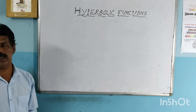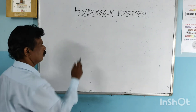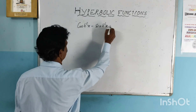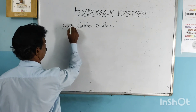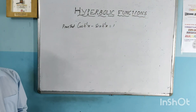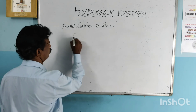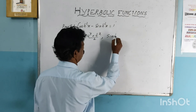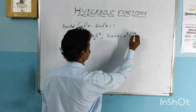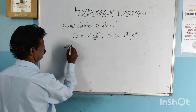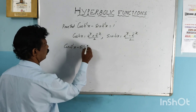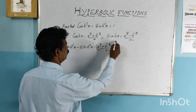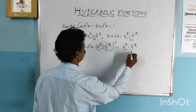Now we can prove some problems based on hyperbolic functions. First, prove that cosh squared x minus sinh squared x is equal to 1. We write cosh(x) equals e raised to x plus e raised to minus x all over 2, and sinh(x) equals e raised to x minus e raised to minus x all over 2. Then cosh squared x minus sinh squared x equals that expression squared minus the other squared.